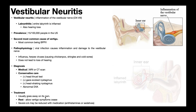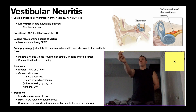Because vestibular neuritis normally goes away on its own, there are no lasting effects on balance or equilibrium. However, in severe cases, there can be lasting effects due to severe inflammation and damage to the vestibular nerve, after which it would present like a hypofunction. With hypofunctions, gaze stabilization becomes impaired, and we treat that with adaptation exercises or gaze stabilization exercises — the most common being VOR times one.